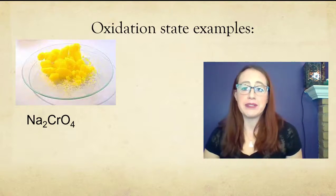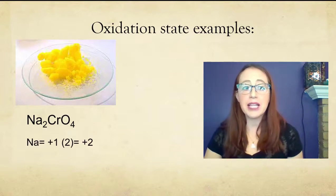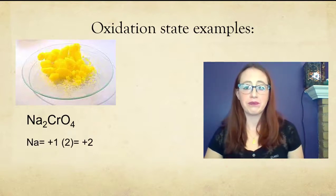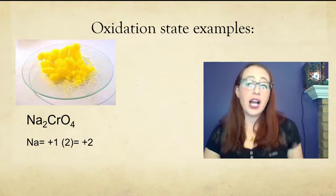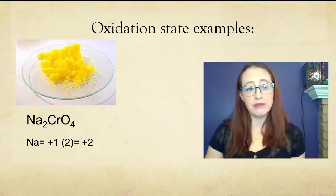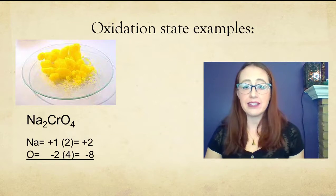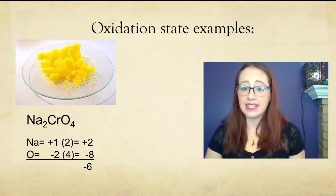Here we have two sodiums, and each sodium has a plus 1, which gives us a plus 2 total. This finishes off the sodiums. Now, each oxygen has a negative 2, and there are four of them, and so that's going to give us a negative 8. So if we look at just what we have so far, that gives us a negative 6.